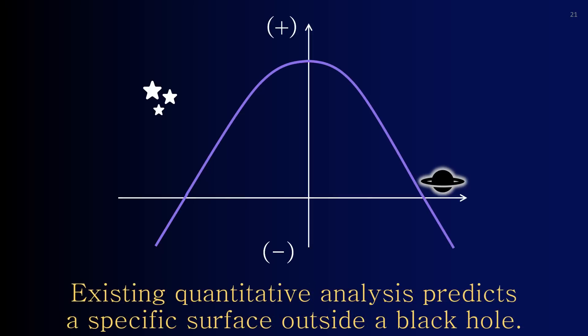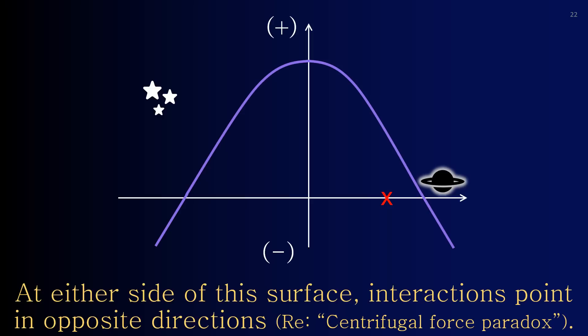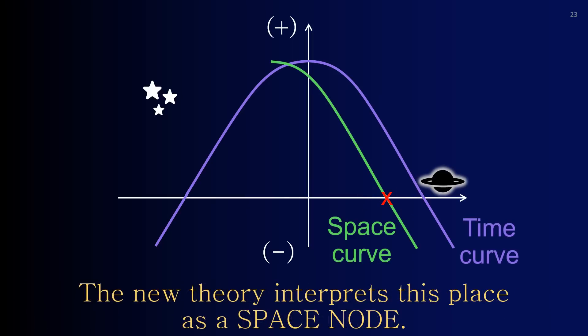Existing quantitative analysis predicts a specific surface outside a black hole. At either side of this surface, interactions point in opposite directions. The new theory interprets this place as a space node.